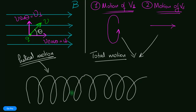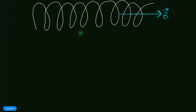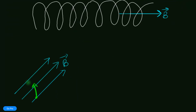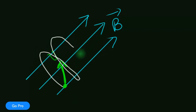So our charged particle ends up going in a helical motion, just like a spring. The plane of the circular motion is always perpendicular to the magnetic field, and that plane advances forward in the direction of the magnetic field. For another example, suppose the magnetic field points in a different direction — you again consider the perpendicular component circulating and the parallel component moving forward, resulting in the same helical motion. That's beautiful!